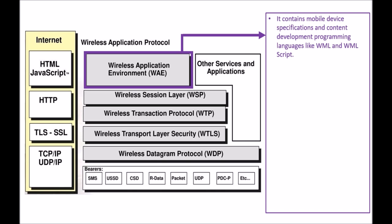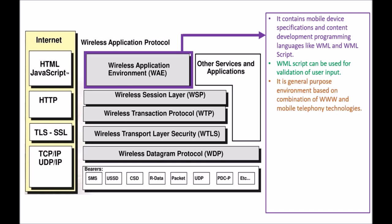The first layer we are discussing is WAE, which is Wireless Application Environment. It contains mobile device specification and content development programming languages like WML and WML Script. WML Script can be used for validation of user input.